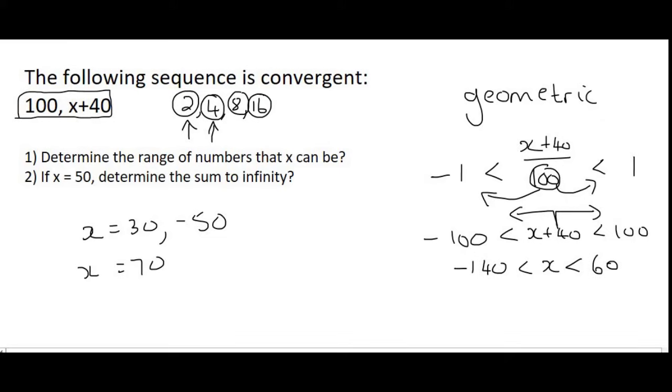So look what this says. It says that for the ratio to be between minus 1 and 1, x has to be any number in between minus 140 and 60. And that's what we found. We found that when x was 30 the ratio was less than 1 and bigger than minus 1.